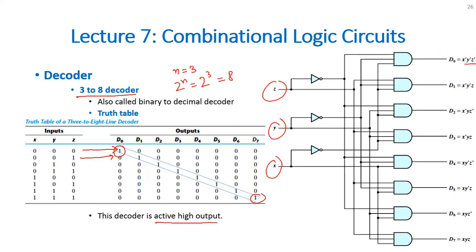Then X dash, Y dash, Z for D1, X dash, Y dash, Z, and finally for D7 it would be X, Y and Z which is directly applied here to this gate. So, this circuit is basically a 3 to 8 decoder.